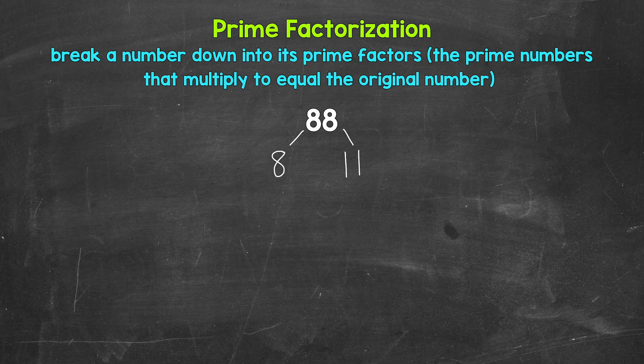But in the end, we will get to the same prime numbers — and that's what's important. Now let's continue to break this down. So we have 8 and 11. Now 11 is a prime number, so we are done here. We can't break that down any further. So let's circle 11 to show that we have a prime number.